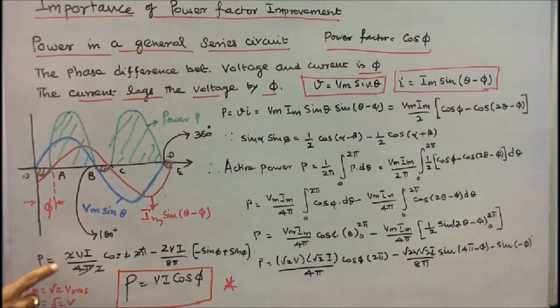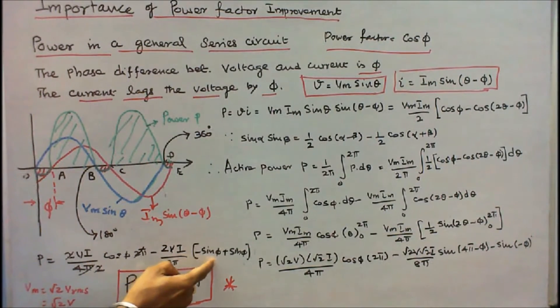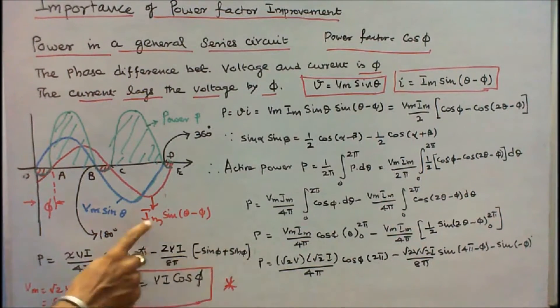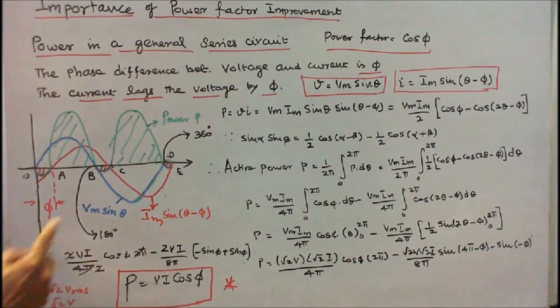P is equal to (2VI / 4π) times cos φ times 2π minus (2VI / 8π) times [-sin φ + sin φ]. This term will become 0. Again simplifying the equation, P is equal to VI cos φ.